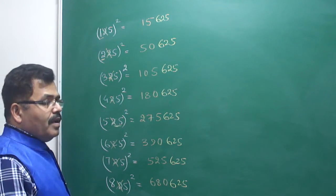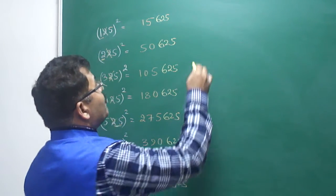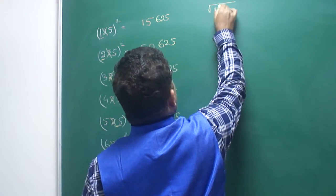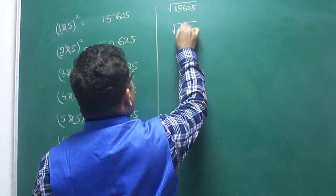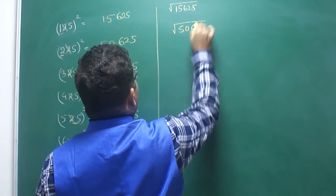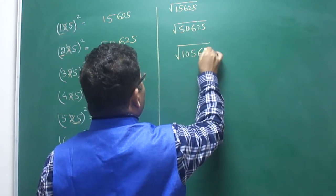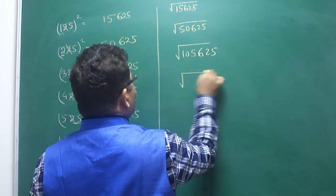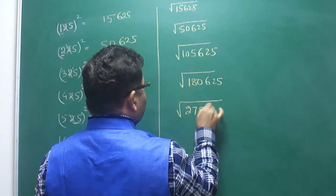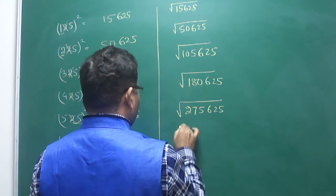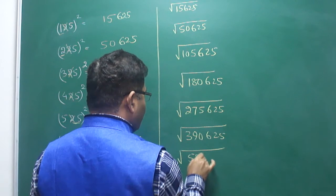So these are the squares of the three-digit numbers of this type: 15625, 50625, 105625, 180625, 275625, 390625, and 525625. Now, correspondingly, if someone has to find the square root of these numbers, here is how to do it.